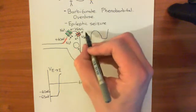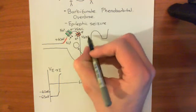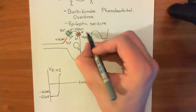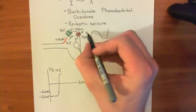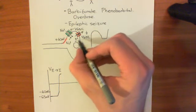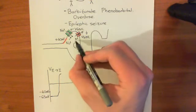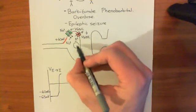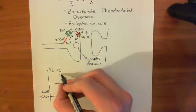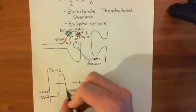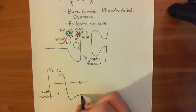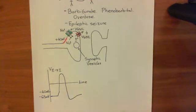Moving positive charge into the extracellular compartment makes it more positive, while the intracellular side becomes more negative. So the electrical potential difference across the membrane becomes increasingly negative. This causes the repolarisation phase of the action potential. It slightly overshoots, then returns to resting potential as the voltage-gated potassium channels close.